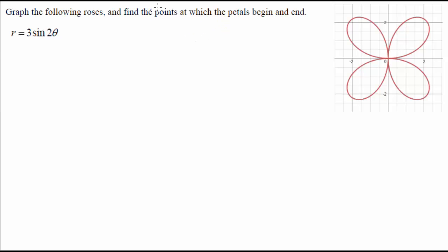Graph the following roses and find the points at which the petals begin and end. So when I graph a function like r equals three sine two theta, I will in this case get what looks kind of like a daisy.